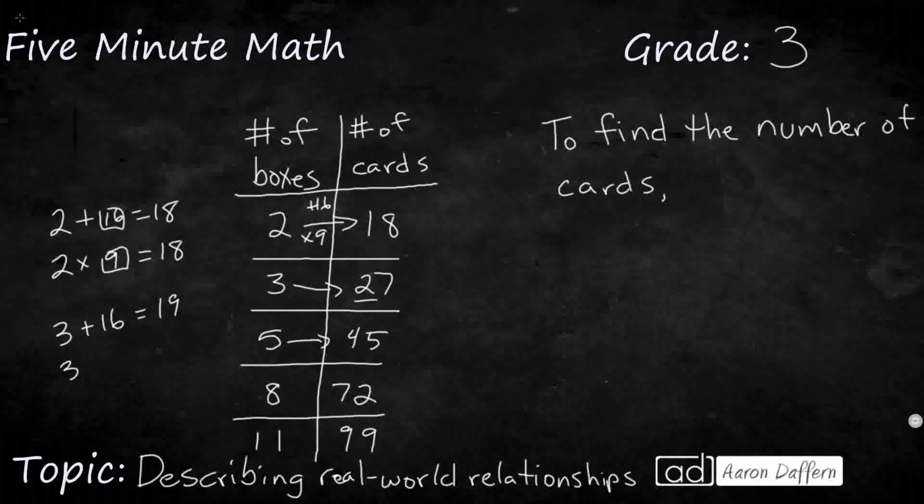Could I say 3 times 9? Yeah, that's going to work. That's the 27. So it looks like my rule here is going to be times 9.